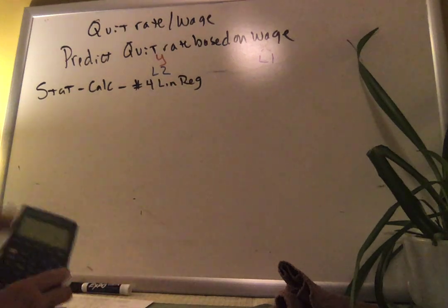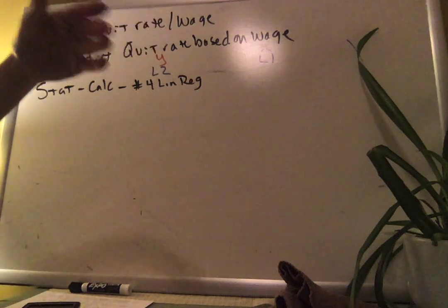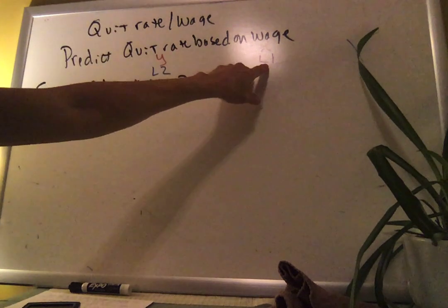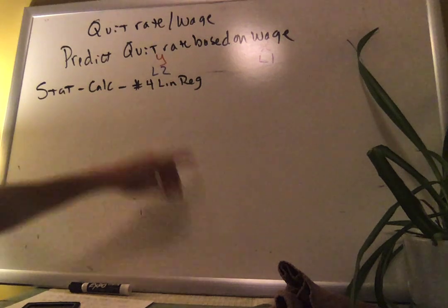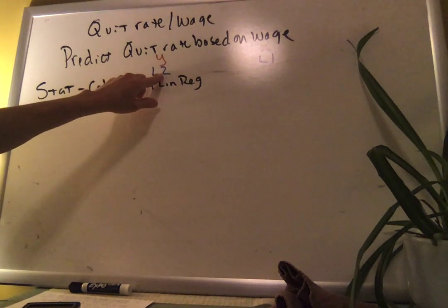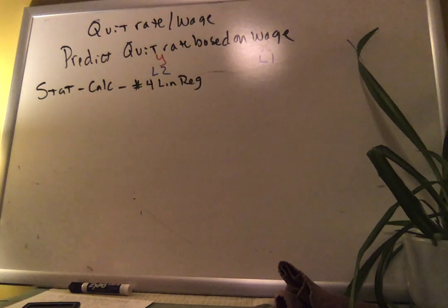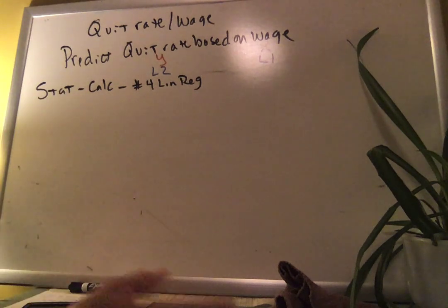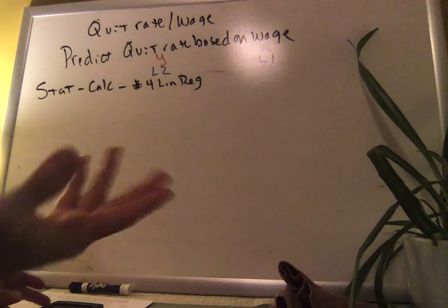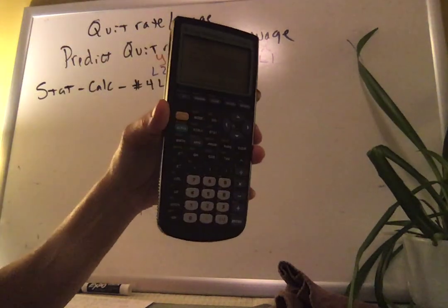Some of you have newer calculators — let me talk to you first. It says 'X list': make sure it says L1. Then it says 'Y list': make sure it says L2. The second function of 1 brings up L1, and the second function of 2 brings up L2. Then hit Calculate.